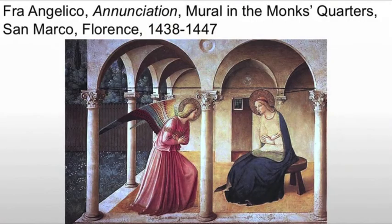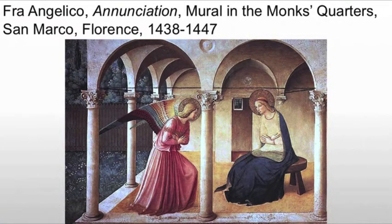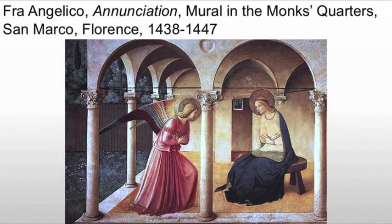So what do we have? We have an Annunciation. In the painting, we have the Virgin Mary and Gabriel — Gabriel with the wings on the left side. Gabriel has come with news for Mary, informing her that she is about to bear the Son of God.